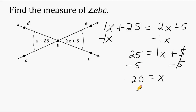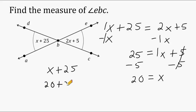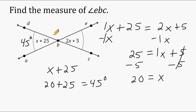Now be careful — 20 is not the angle measure of EBC. 20 is just the value of X. So what we have to do is take either one of these expressions — let's just take X plus 25 — and plug 20 in for X. So if we substitute X with 20, that would give us 20 plus 25, which is equal to 45 degrees. So we can say that angle DBA is equal to 45 degrees. And because this angle over here is vertical to, or equal to, this angle, we would say that this angle is also equal to 45 degrees.